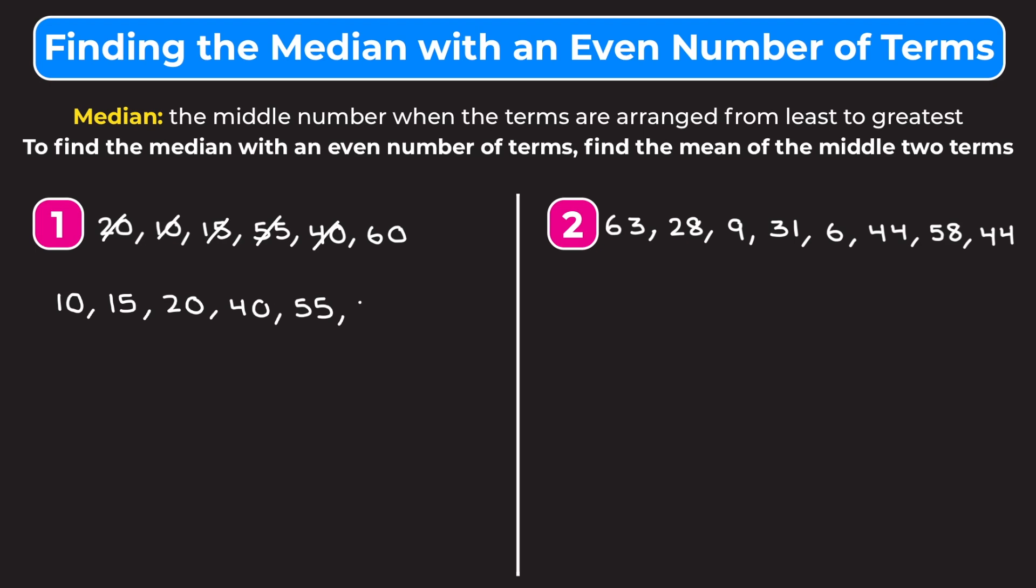If you have an odd number of terms, you're just going to take the middle number. But because we have an even number of terms, you may notice that we have two middle numbers: 20 and 40. We don't have one middle number, so now we have to do an extra step to find the median. That extra step is to find the mean of the middle two numbers. We're going to find the mean or the average.